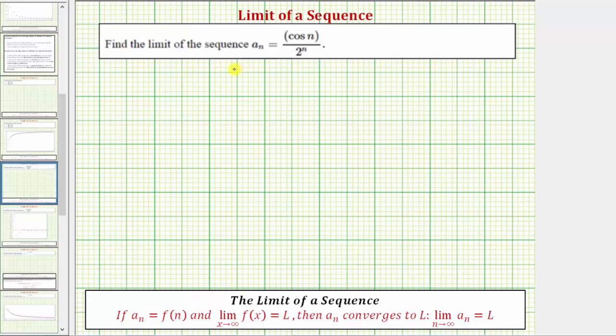We're going to find the limit of the sequence given by a sub n. Looking at the theorem below, if a sub n equals the function f of n and the limit as x approaches infinity of f of x equals L, then a sub n converges to L and the limit as n approaches infinity of a sub n equals L.